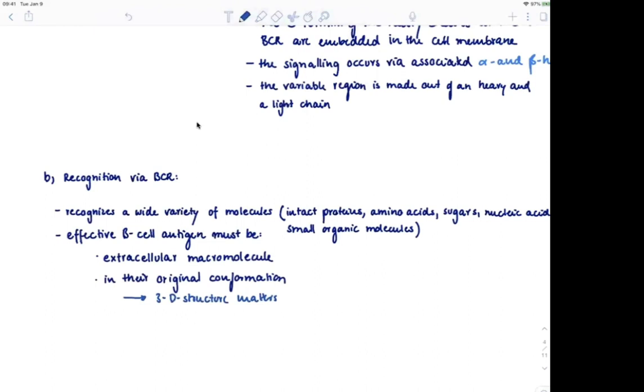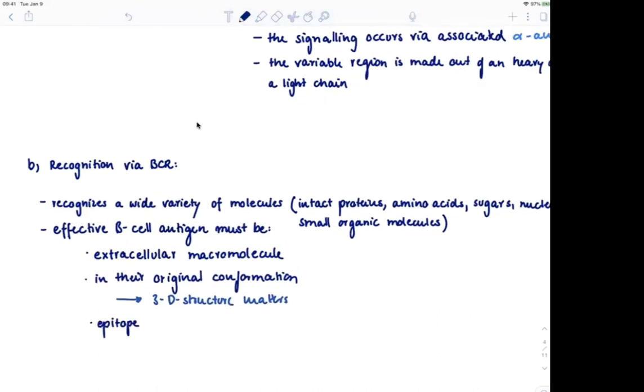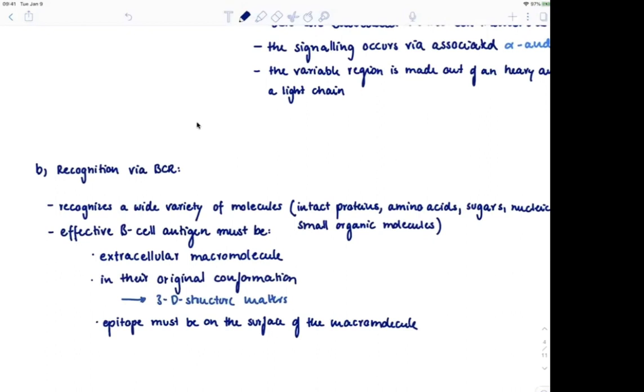And then also, the epitope must be on the surface of a macromolecule. And that should also make sense, because if it's not on the surface, the BCR cannot recognize it. The BCR doesn't get into cells. That concludes the video on the BCR receptor structure and what it recognizes.